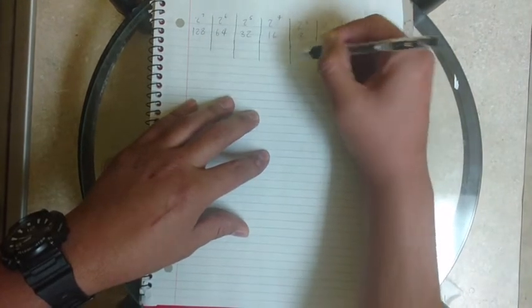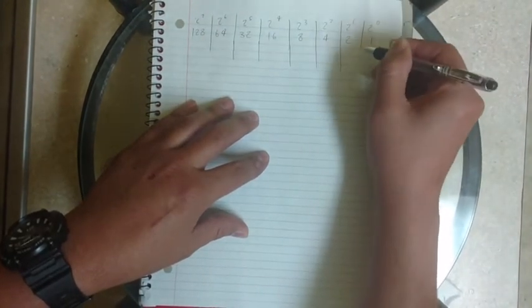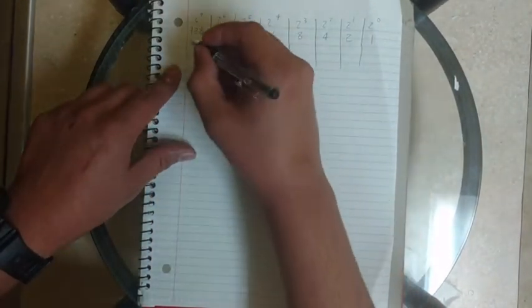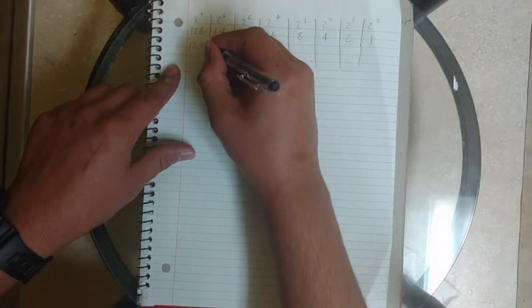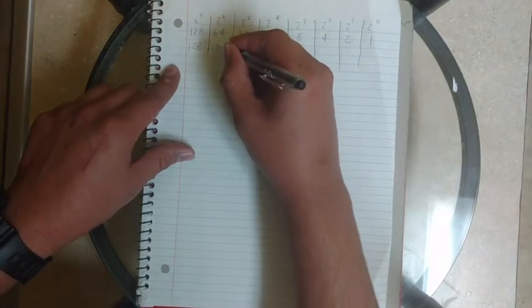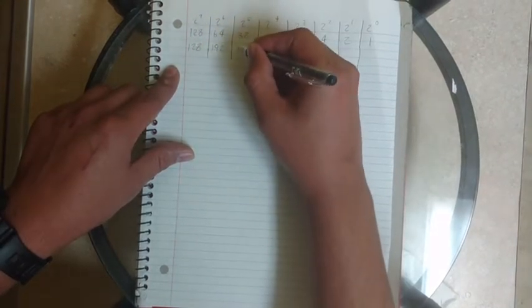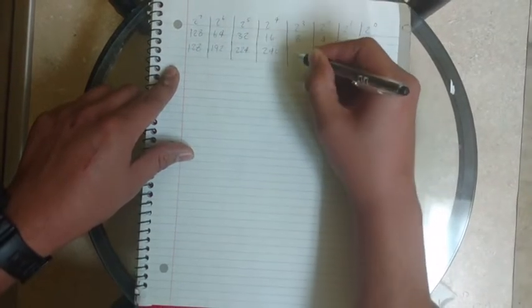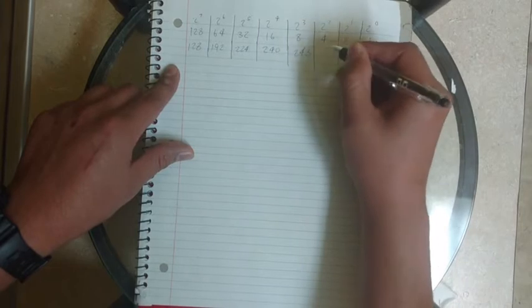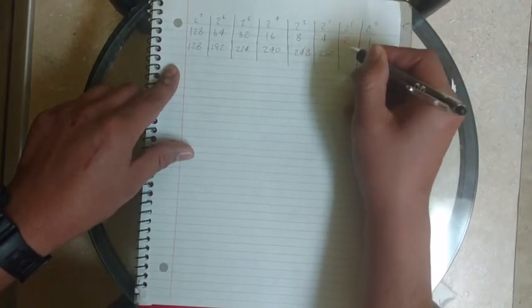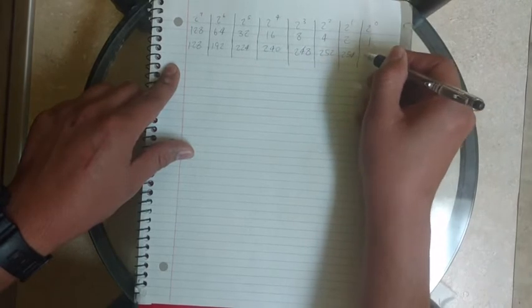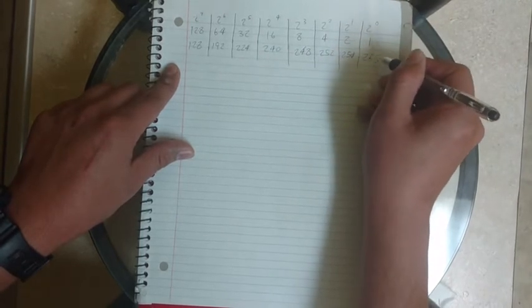Now underneath it, you're going to write 128 plus 64, which is 192, plus 32, which is 224, 240, 248, plus 4, 252, plus 2, 254, plus 1, 255.